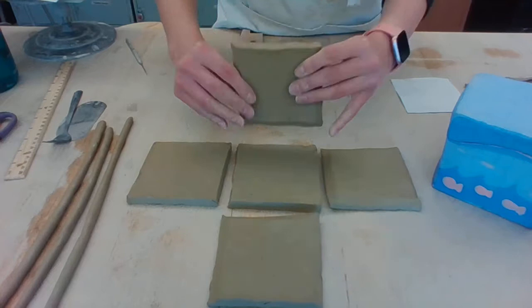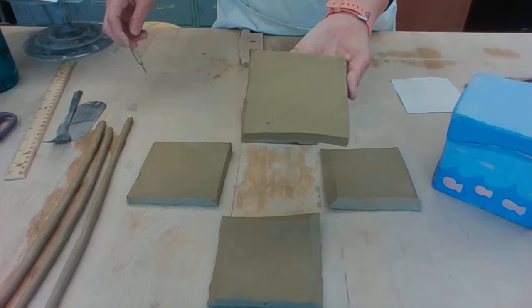Except for the bottom one, the bottom gets all four sides beveled because all four of the slab walls are going to be going up.